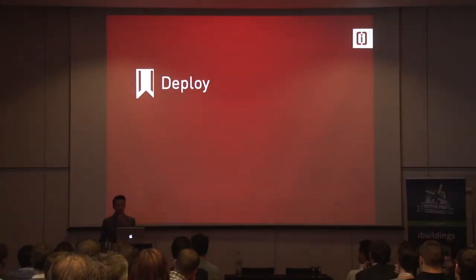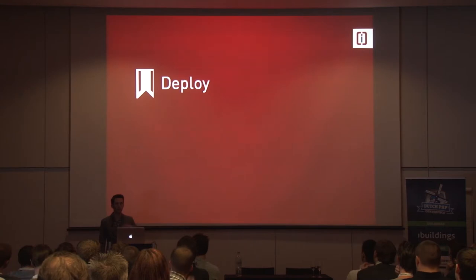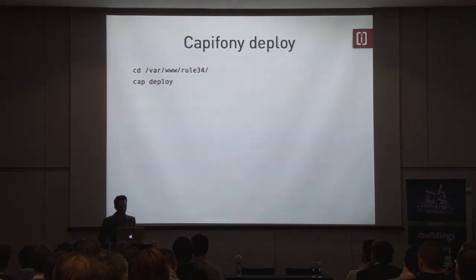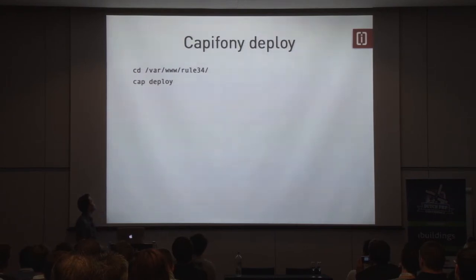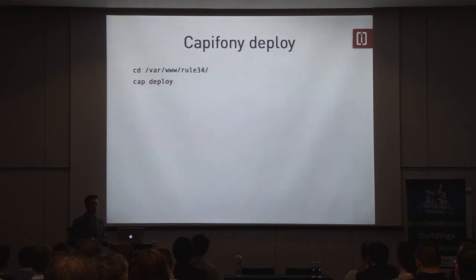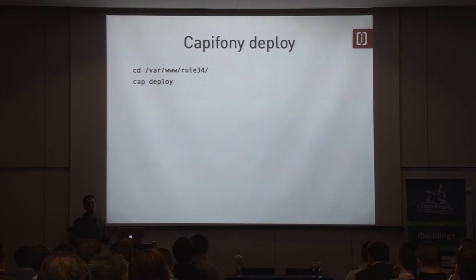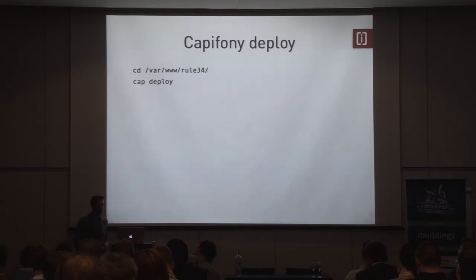To set it up on the remote server, go to the web root and do 'cap deploy:setup'. It will connect via SSH to your remote server, run some scripts to initialize, create the right directory structure, set up config and user permissions, and you're done. Now we can start deploying. The beauty is that the config file is within your repository, so you distribute it to all your colleagues and everybody can deploy if they want to and have access. To deploy, just do 'cap deploy' — it will connect to your server, run migrations, update vendors, update code, create symlinks, and do everything for you.